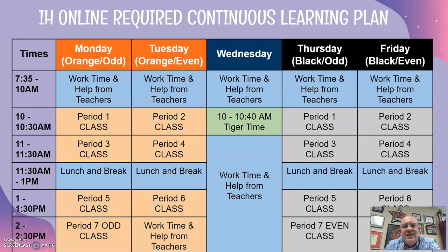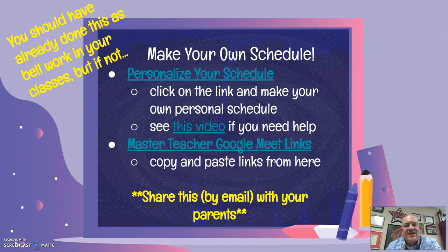As you've been working with, this is the calendar and schedule that you're going to be using. You should have been updating this schedule to personalize it for just you by using this next slide. You should make your own personal copy and save it with your name. There's a video that shows you what you need to do with your personal copy, and all of the Google Meet links you need to finish your personalized copy are right there on the slide.